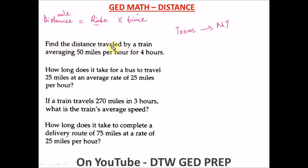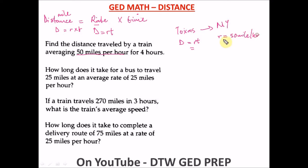Example one: find the distance traveled by a train averaging 50 miles per hour for four hours. Remember our formula: D equals R times T. Our rate R is 50 miles per hour and our time T is 4 hours. So D equals 50 times 4, which equals 200 miles. The total distance traveled by the train is 200 miles.